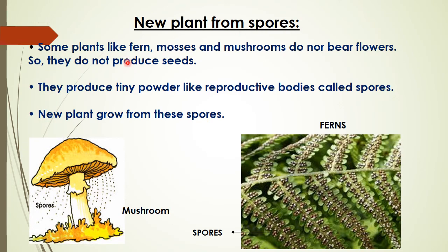New plants from spores. Some plants like ferns, mosses and mushrooms do not bear flowers, so they do not produce seeds. Instead, they have spores — tiny powder-like reproductive bodies mostly present on the underside of fern leaves or mushrooms. These are not seeds as they are not formed inside flowers. When these spores are scattered, a new plant grows from them.